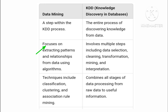The KDD process includes multiple steps: data selection, cleaning, transformation, and mining. It involves everything — first choosing the right data, then cleaning it, transformation, and finally checking if the patterns you found are useful.